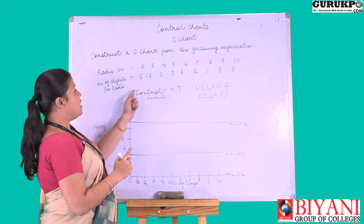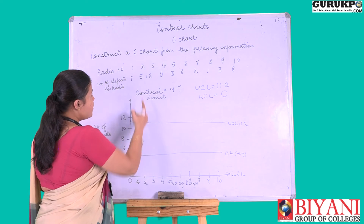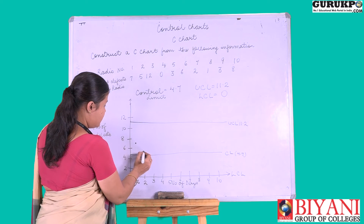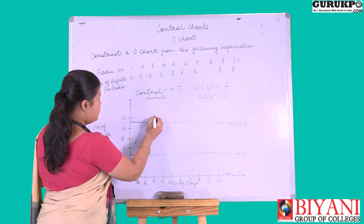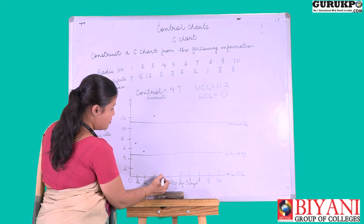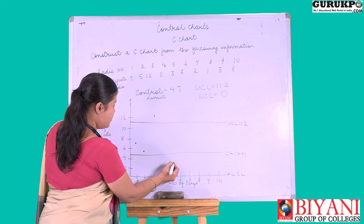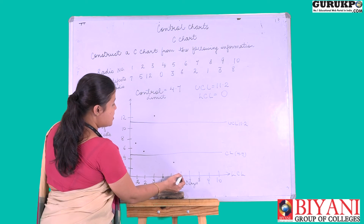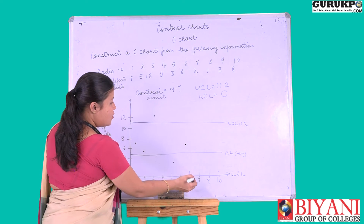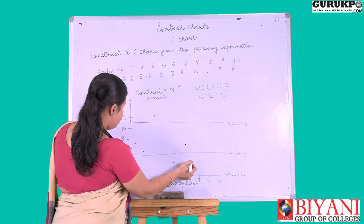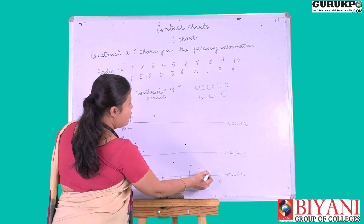Now accordingly we are going to mark the data points within the limits. On radio 1 the defects are 7, on radio 2 it is 5, on radio 3 it is 12, on radio 4 it is 0, on radio 5 it is 3, on radio 6 it is 6, on radio 7 it is 2, on radio 8 it is 1, on radio 9 it is 3, and on radio 10 it is 8.